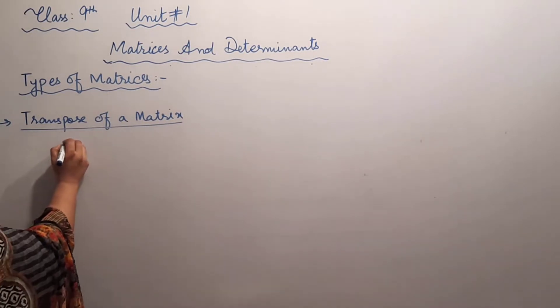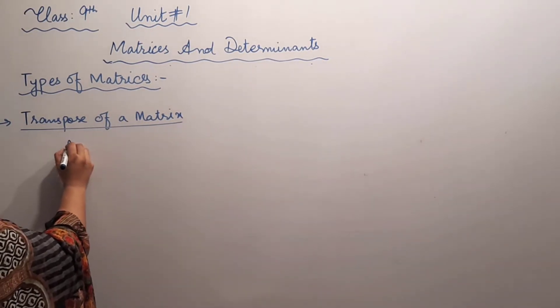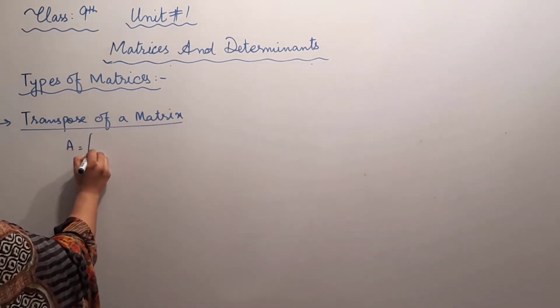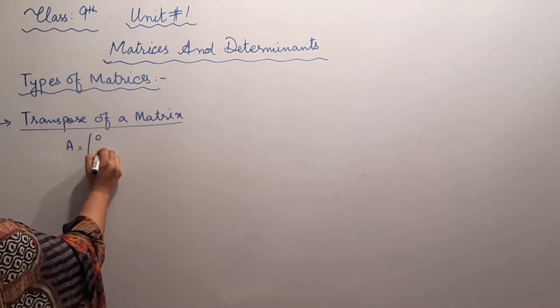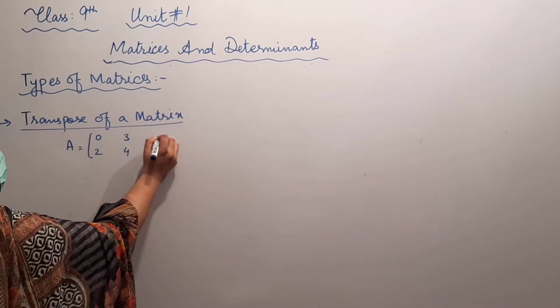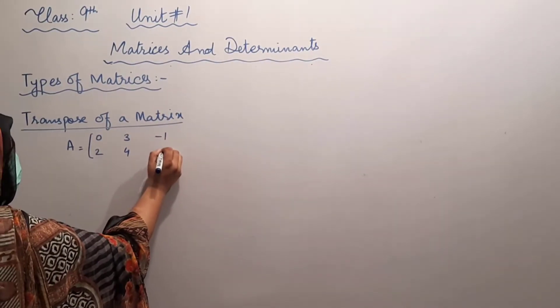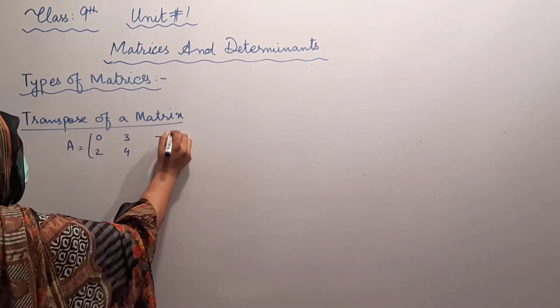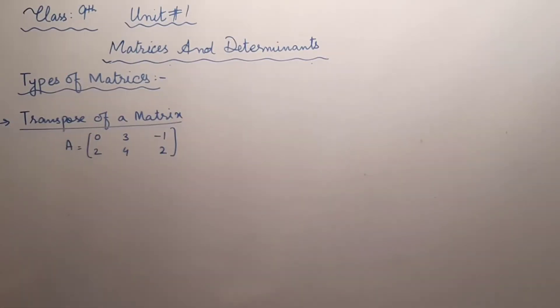If A is the matrix like 0, 2, 3, 4, minus 1, 2 — that is matrix A.